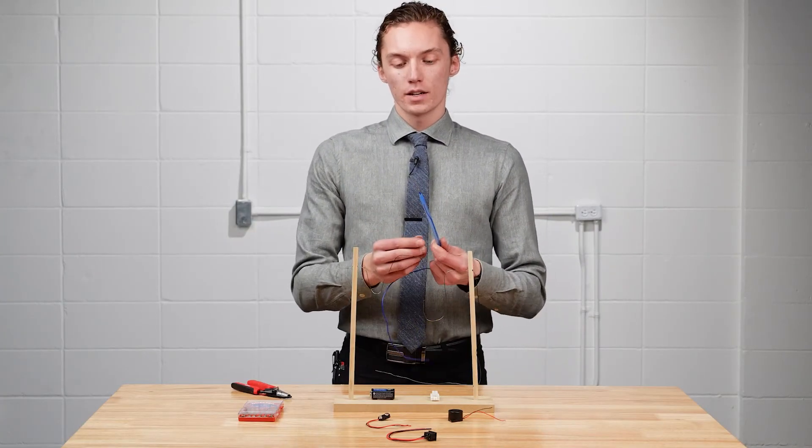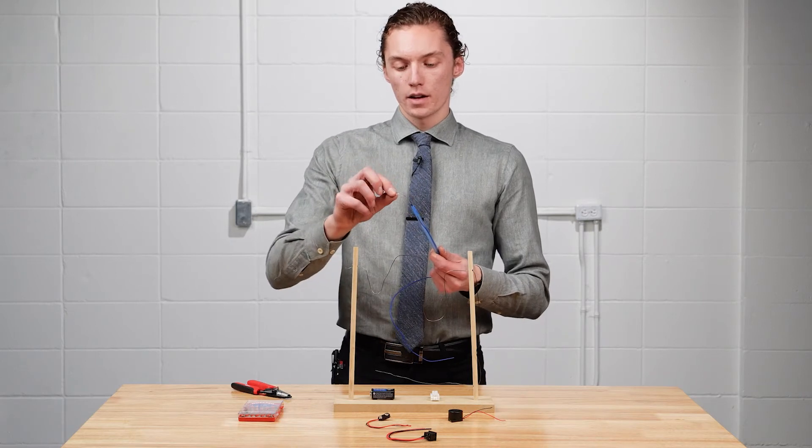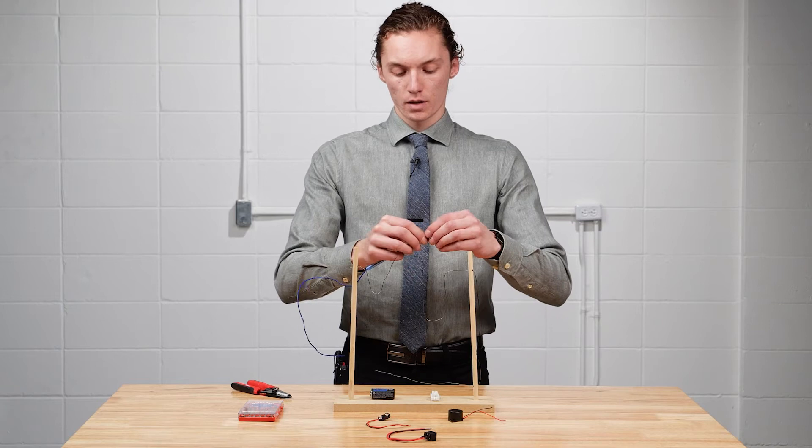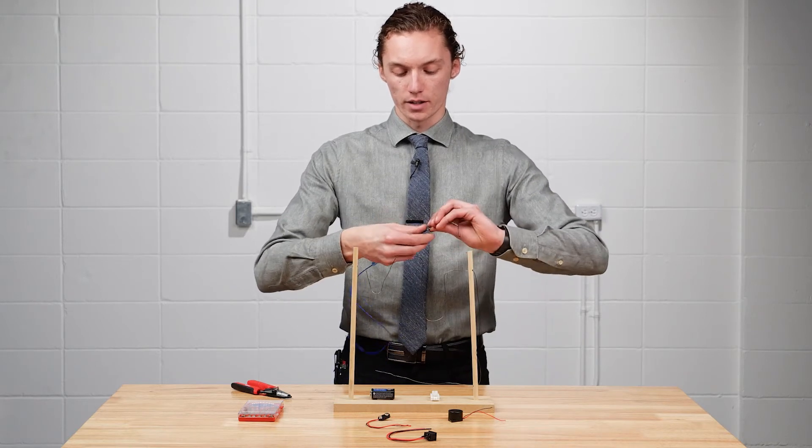Once you have your wand threaded, take the bare end of the wire and make a large loop back on itself. Make sure to wrap the wire securely around itself.